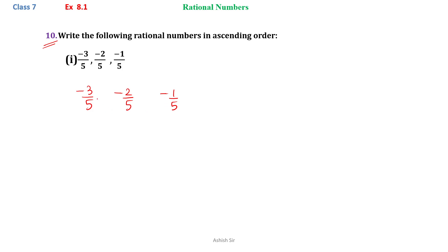So, we can clearly see that minus 1 by 5 is greater than minus 2 by 5, and minus 2 by 5 is greater than minus 3 by 5. So the answer goes in this way: minus 3 by 5 is the first one in ascending order, then minus 2 by 5, and then minus 1 by 5.